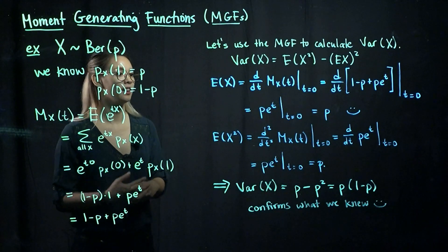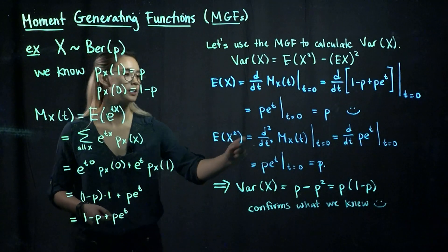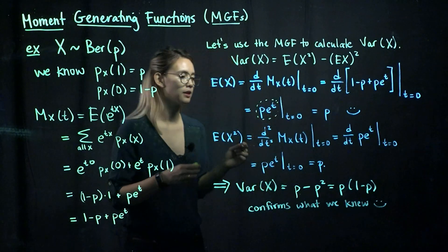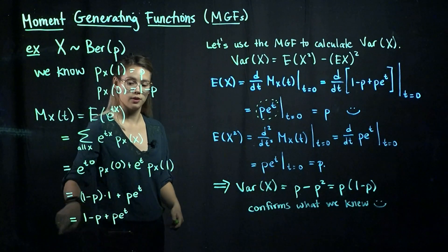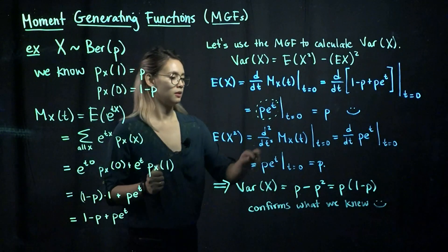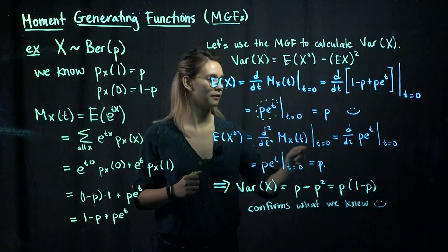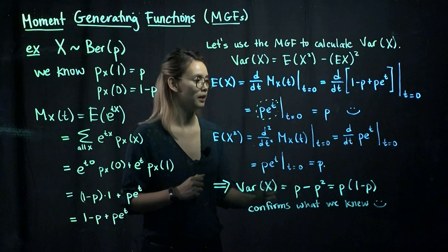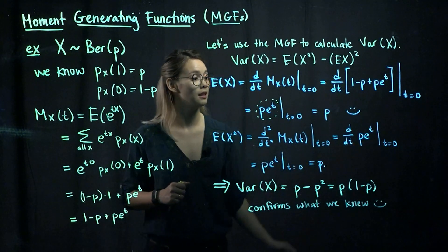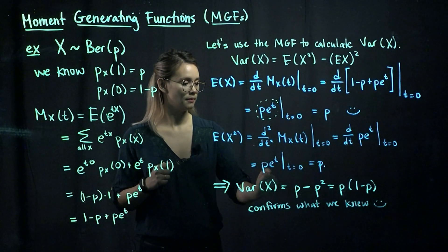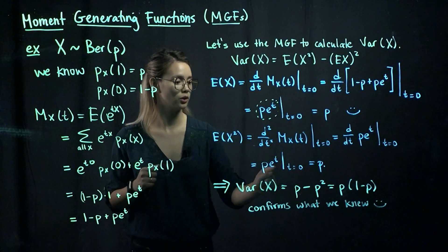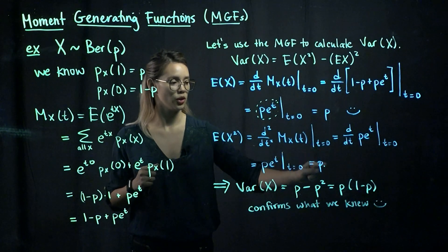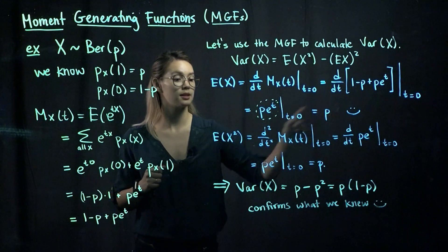To calculate the second moment, we take one more derivative. The second derivative of our MGF is the derivative of p e to the t, evaluated at t equals 0. The derivative of p e to the t with respect to t is p e to the t, and evaluating at t equals 0 gives us just p. So the first moment equals p and the second moment also equals p.